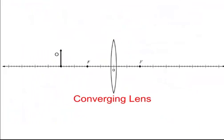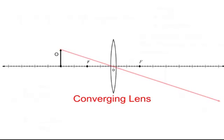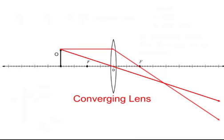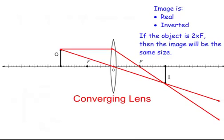Here are our lens and mirror problems. For a converging lens, there are two main rays: the first goes straight through the thin lens, and the second goes parallel then converges through the focal point. That gives you your image, which is real and inverted. It might be larger or smaller, but at twice the focal length the image will be the exact same size and the exact same distance away.